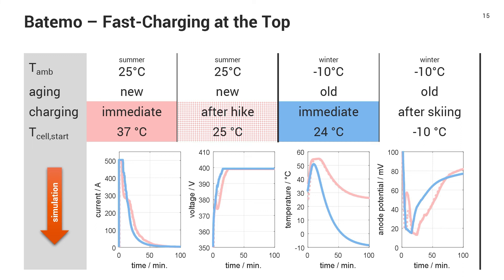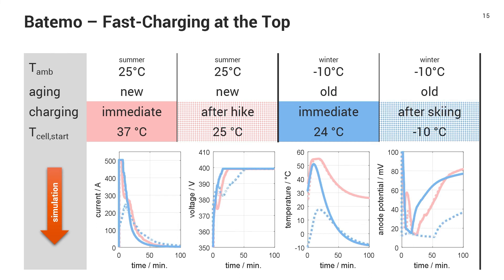But what if I go skiing first and charge after the skiing so that my pack is cold? Yeah, then it takes a lot longer. You see that I cannot even use the maximum current of the charger anymore, because my anode surface potential limits me and it drops down severely to about the 10 mV safety margin that I hold here. And this significantly increases the charging time.